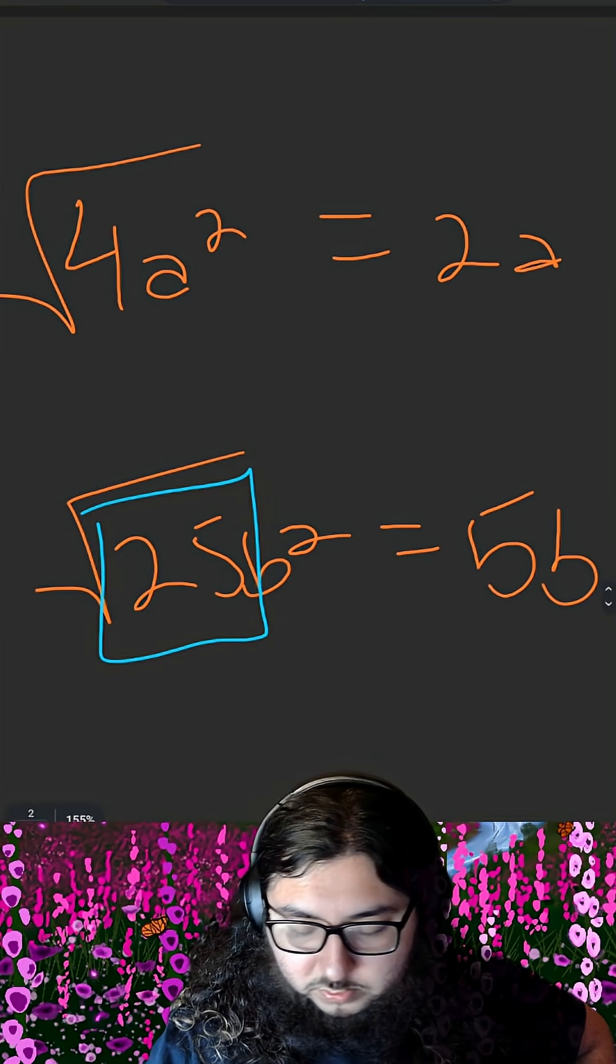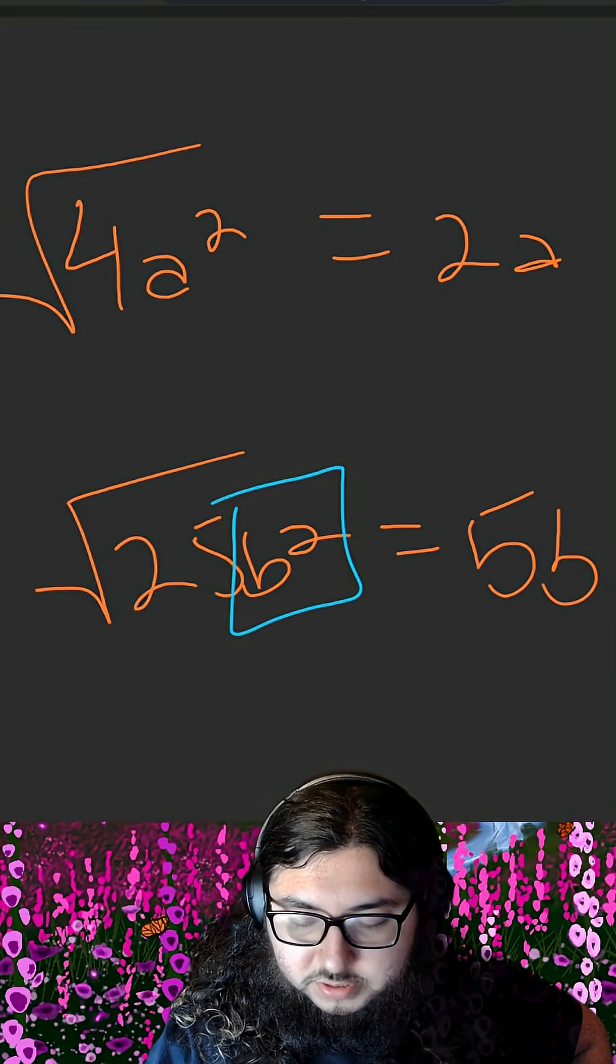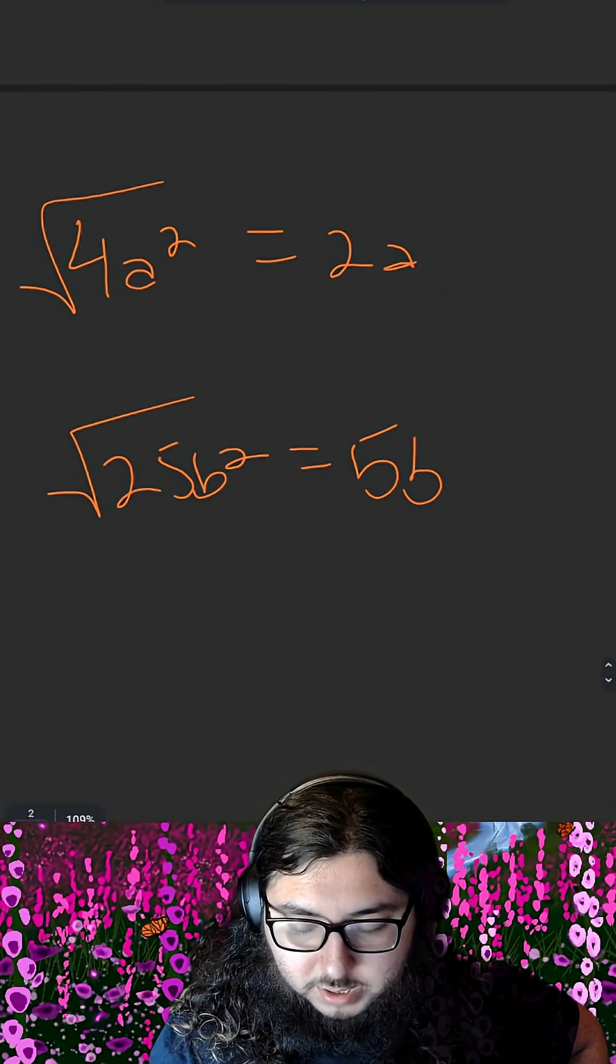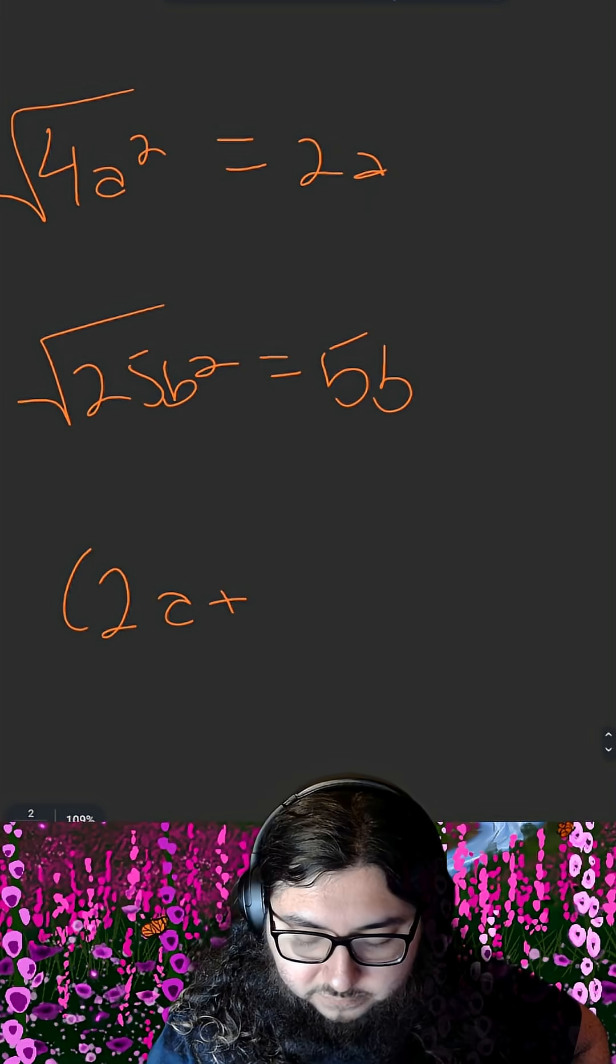Similarly down here, square root of 25 is 5. The square root of B squared is just B. So 5B and 2A. And then we'll write 2A plus 5B.